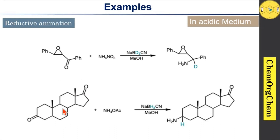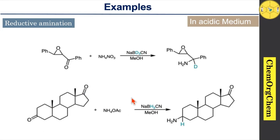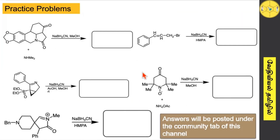Here is another interesting example: a steroidal framework having two carbonyl groups. When you use ammonium acetate under sodium cyanoborohydride reaction conditions, it readily forms the imine by reacting with one carbonyl group. The resulting imine is readily reduced by sodium cyanoborohydride to give the corresponding aminated product. The keto group remains unaffected under these conditions, which is probably due to the steric effect from a nearby methyl group. Here are some practice problems — when you get free time, give them a shot.